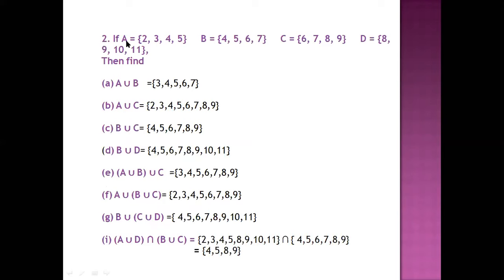So the question is: A = {2, 3, 4, 5}, B equals this one, C is the set and D is the set. Then we have to find A union B. We will merge all the elements of A and B without repetition. So A union B will be {3, 4, 5, 6, 7}.